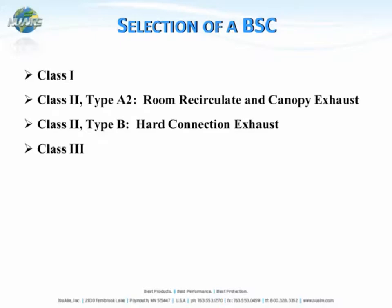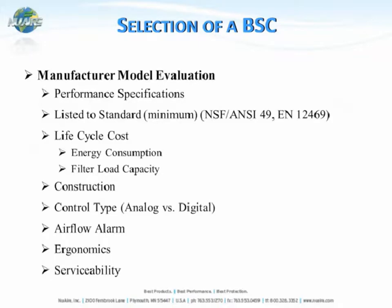After asking yourself those questions, you're able to determine what class and type of biological safety cabinet configuration might work best for your lab — whether it be a Class I, a Class II Type A2 recirculating or exhausted to the outside, a Class II Type B cabinet hard connected and exhausting to the outside, or a Class III glove box. Once you make that determination, it's time to look at different manufacturers, considering their performance specifications and making sure they meet the minimum standards listed.